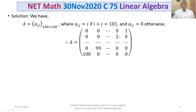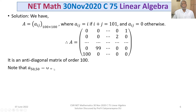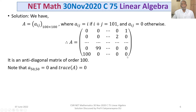The entries lie on the anti-diagonal and remaining elements are all 0. Such a matrix is called an anti-diagonal matrix of order 100. We note that the 50th row, 50th column entry: i+j = 50+50 = 100, which is not 101, so that entry is 0. In fact, all elements on the main diagonal are 0, therefore the trace of A equals 0.